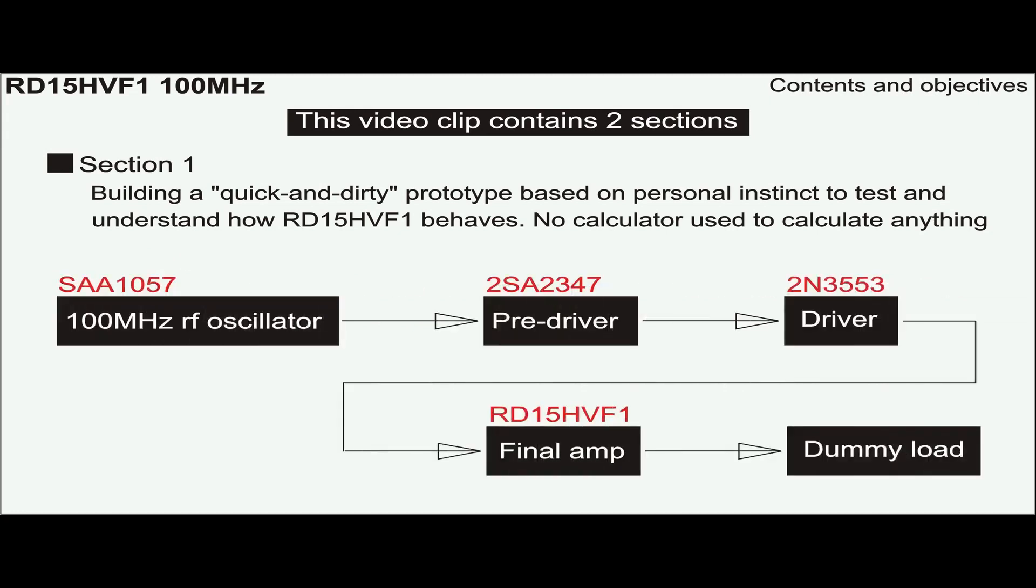The prototype uses the SAA-1057 base oscillator operating at 100 MHz. It then drives three other transistors and a dummy load.